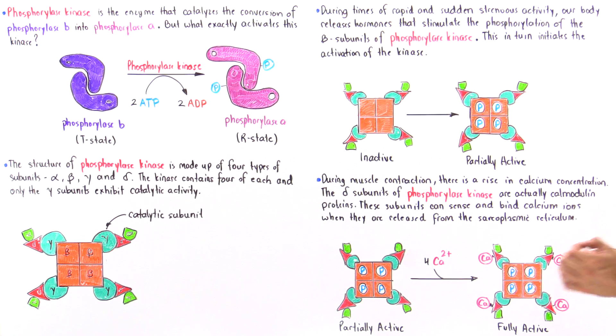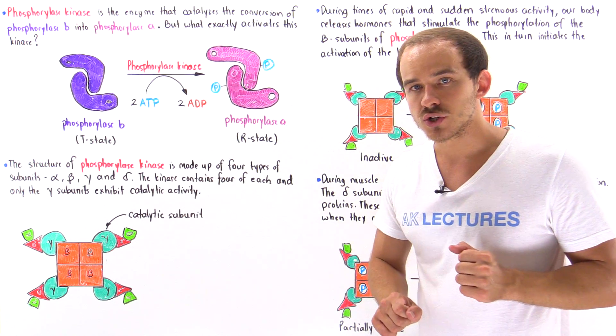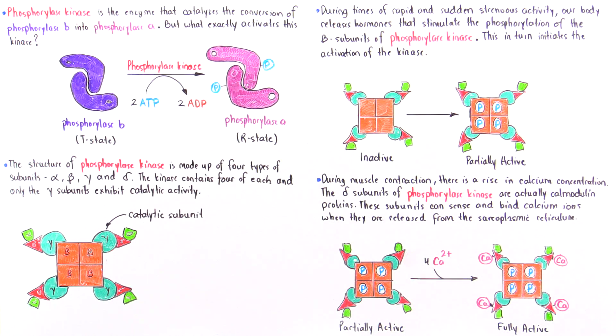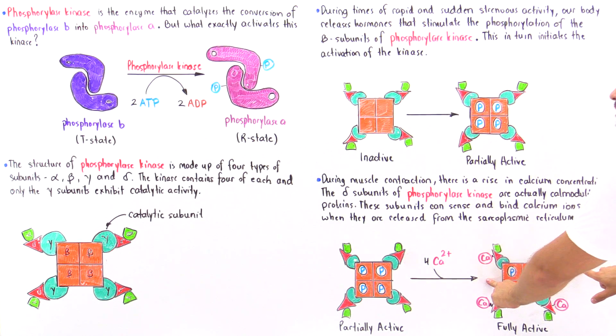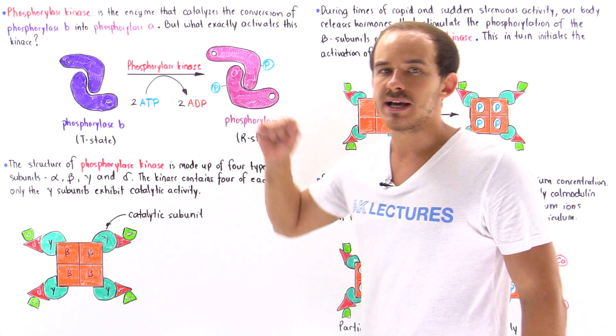And once the calcium ions bind onto the red structures, that transforms this partially active enzyme into the fully active phosphorylase kinase. And only now can this structure actually carry out this process with full activity.